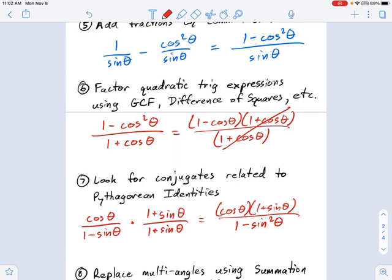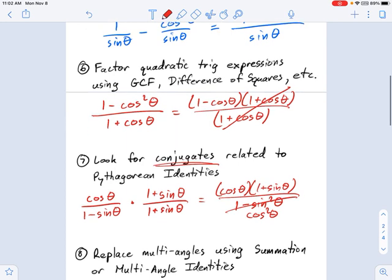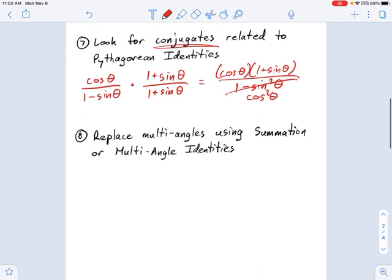So 1 minus sine squared theta, maybe I turn that into cosine squared theta. And if this is cosine squared theta, I see there's something I could simplify on the top and bottom now, a factor of cosine. And maybe that's helpful for whatever proof I'm working on. So conjugates are a useful thing to remember. They come up a lot, especially related to differences of squares factoring.